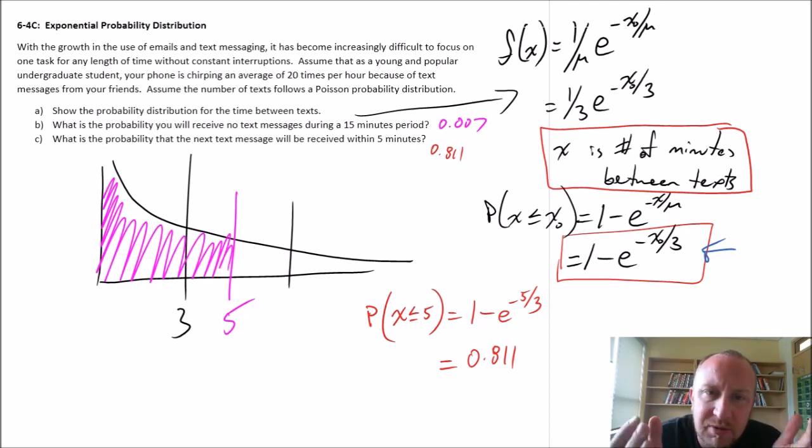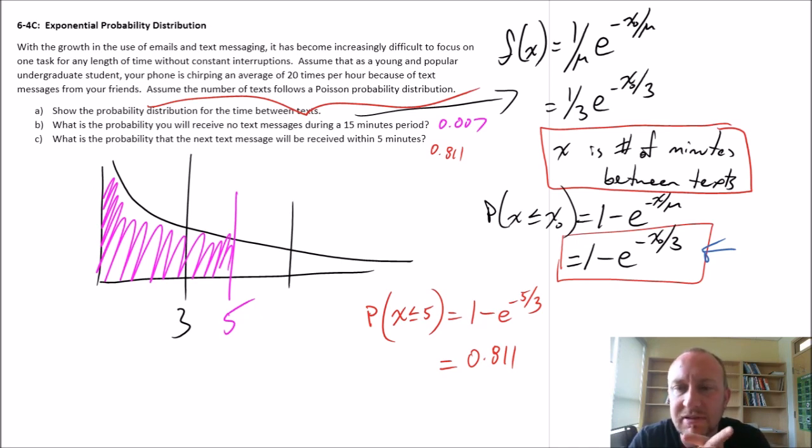This problem gives us a little bit of insight as to the relationship between the Poisson probability distribution, the discrete probability distribution, and this one, the exponential, which is the continuous version of it. So we can move back and forth. Here I have a variable that follows a Poisson probability distribution, and now we can talk about it in terms of the continuous variable, in terms of the time interval, the time between events rather than the number of events. I hope that this was helpful. You can start to get into some interesting problems now. Lots of interesting tools at our disposal with these different distributions. Thanks for watching. Bye-bye.